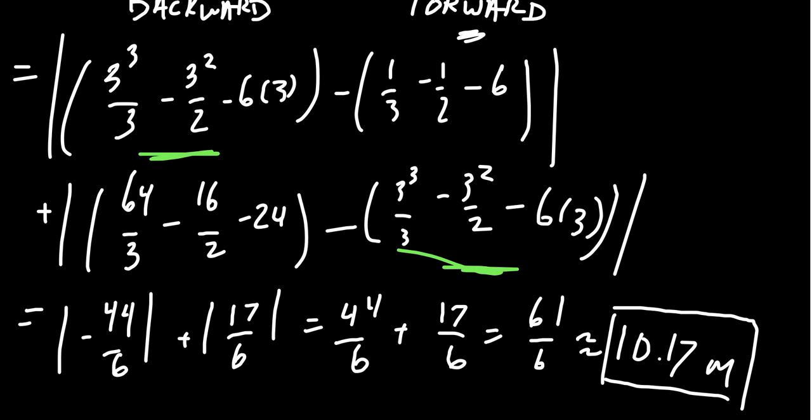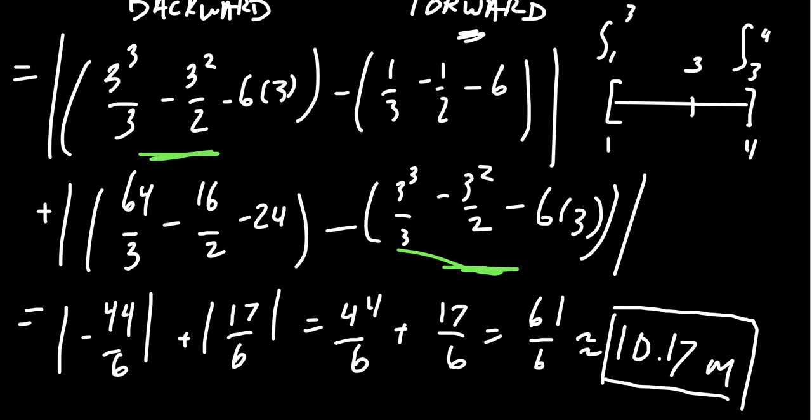To summarize: displacement is simply the regular definite integral, giving the net change in position. For total distance, you take the integral of the absolute value of the velocity function, find the x-intercepts of v(t) within the interval, break the integral at those intercepts — here at t = 3, splitting one to four into one to three and three to four — and take the absolute value of each piece before adding them together.